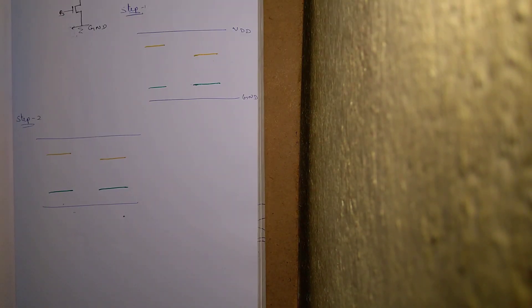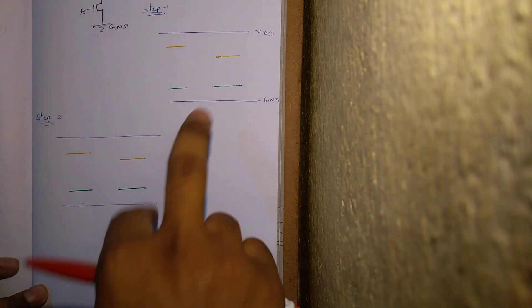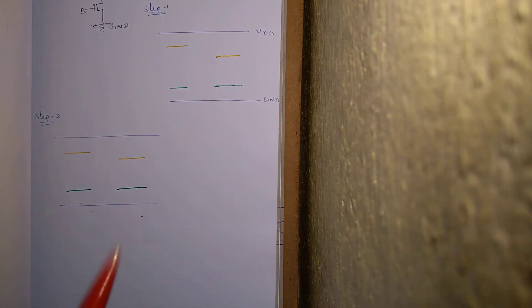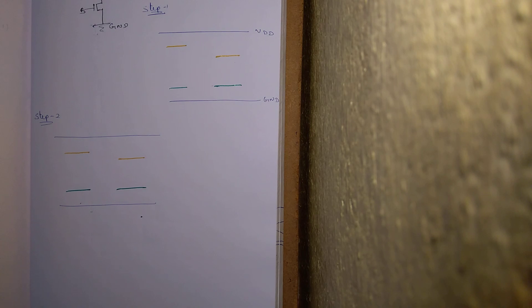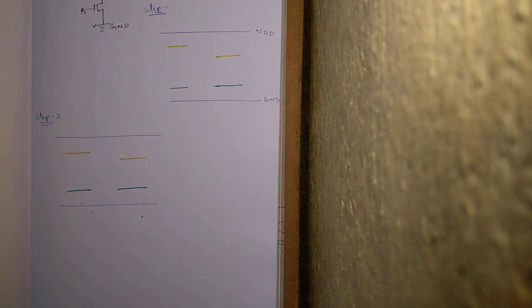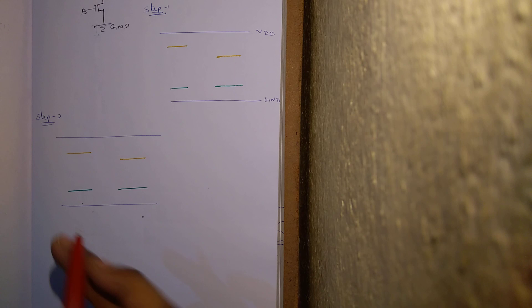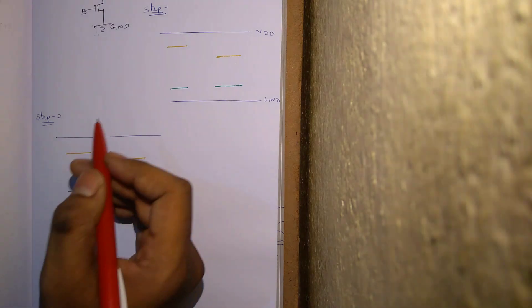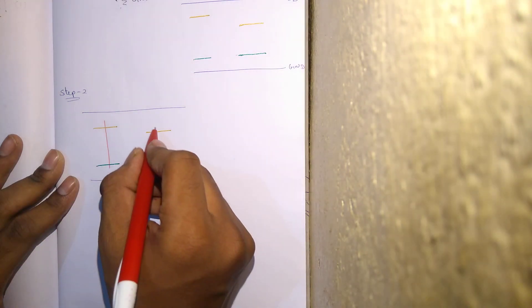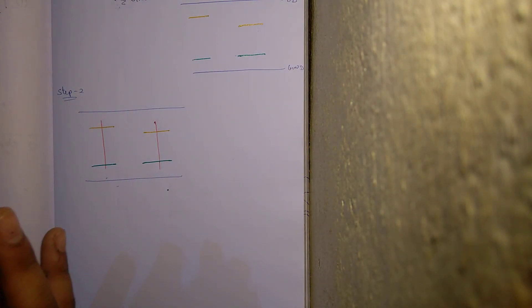I am redrawing it again here. In the second step we need to draw the polysilicon lines. Drawing polysilicon is just your second step — that's it. You are done with your second step.